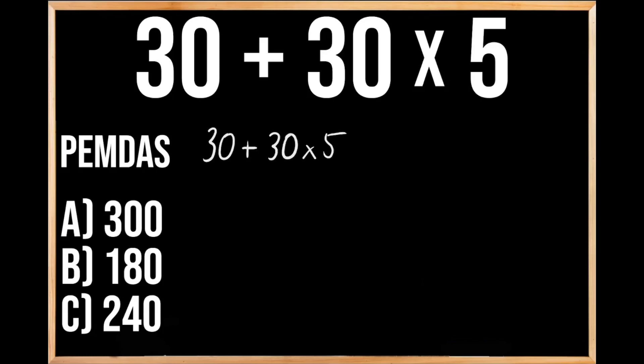Now when solving a problem like this, a mistake that a lot of people will make is they'll just solve from left to right. So first, they're going to add 30 and 30 together, which we know is going to give us 60, and then they're going to multiply that 60 by 5. And when we multiply 60 by 5, we get 300, so that means that our answer should be A, 300.